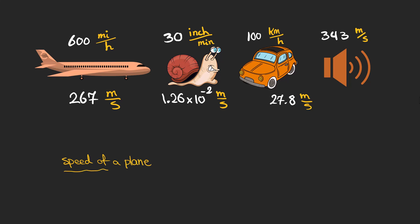So by dividing the speed of a plane by the speed of a snail in meters per second, we find that a plane is roughly 20,000 times faster than a snail, not 20 times.